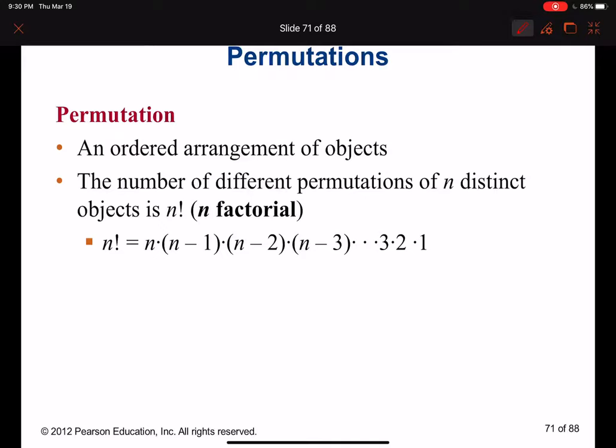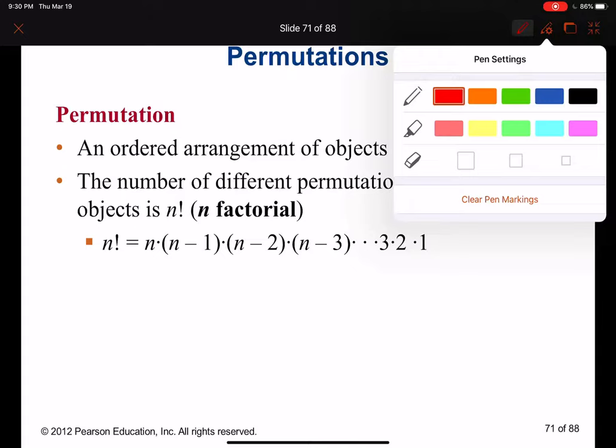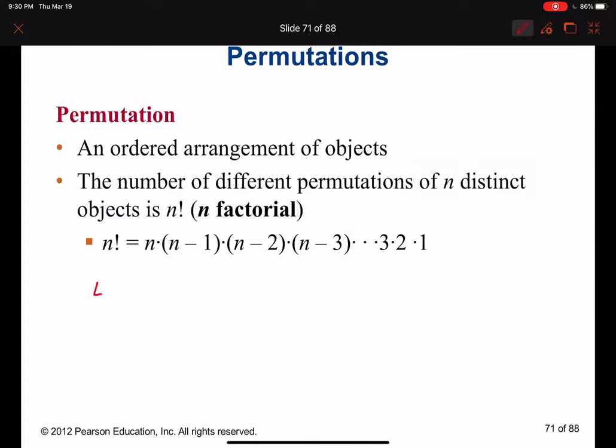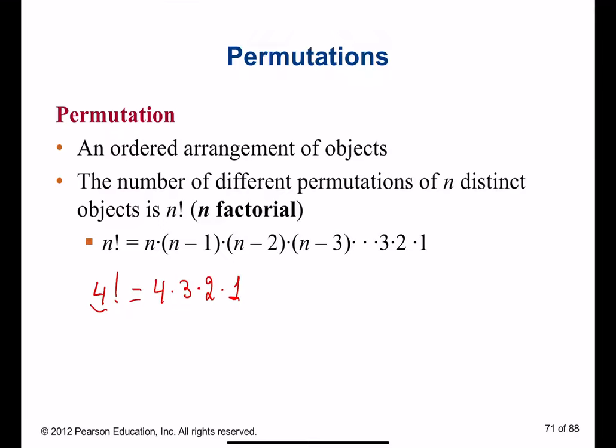Do we know what factorial means? For example, if I have factorial 4, that means you take the number 4 and multiply by the entire sequence all the way to 1. So that will be 4 times 3 is 12, 12 times 2 is 24.